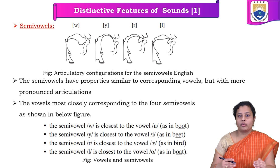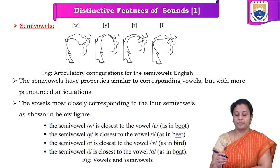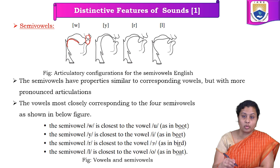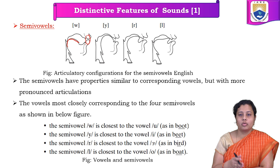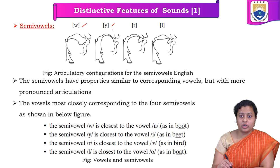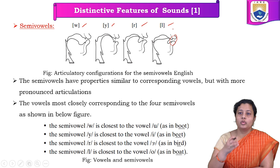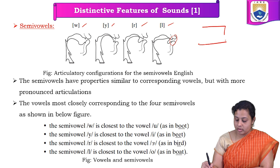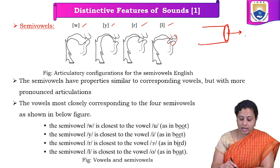When we see the articulation configuration of semi-vowels — how the sounds are created — we observe the tongue and the mouth. For 'v,' 'ya,' 'r,' and 'l' sounds, the mouth is opened; nowhere is the mouth closed. We are creating an orifice or small opening through the mouth for airflow to pass out, whereas the tongue is placed at different positions.